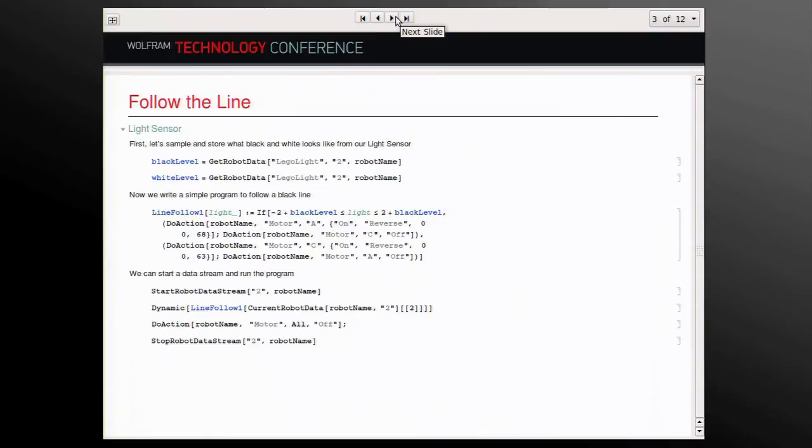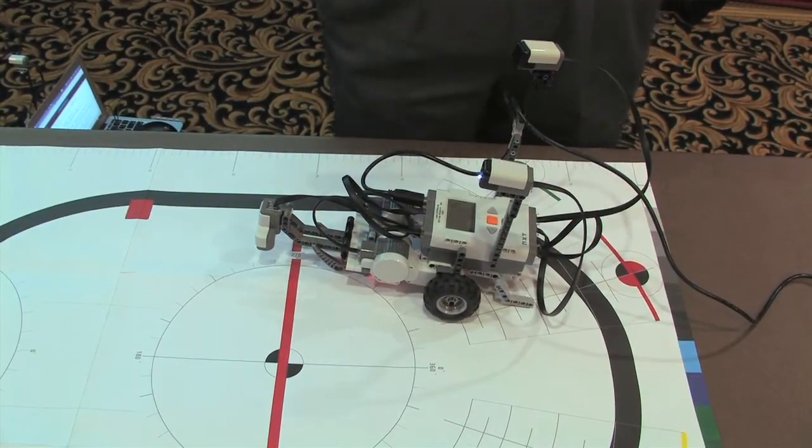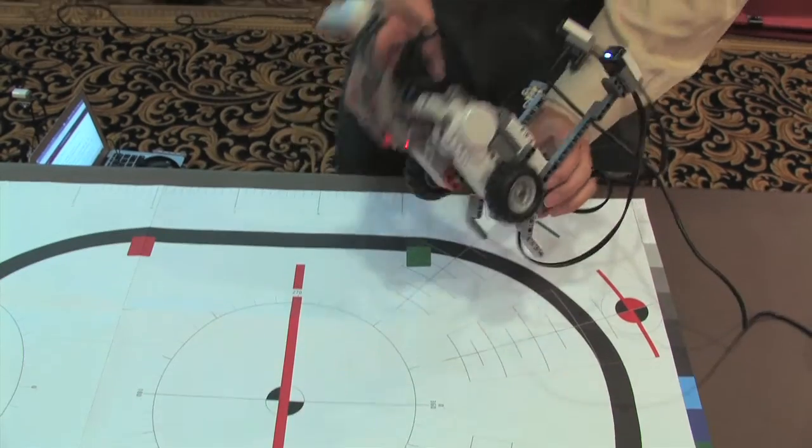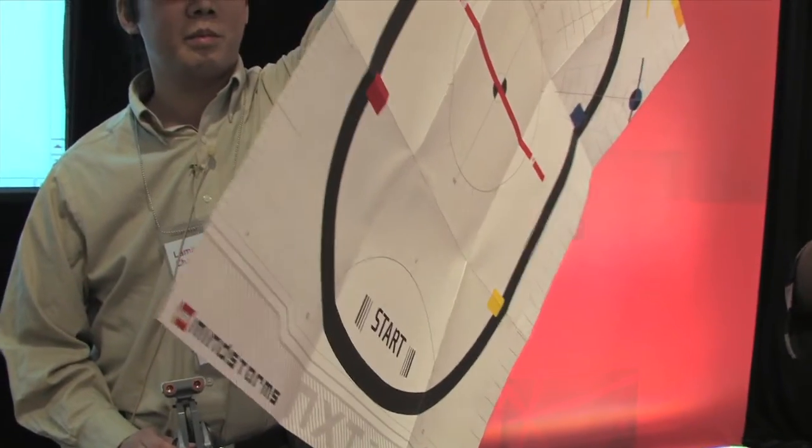Next up, we're going to do follow the line, which is a very basic education-type experiment. Camille is going to set you up for that. This is a pretty classic beginning robotics problem. We have some sort of track. We have a black line and a white background, as you can see on the screen.